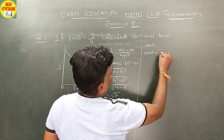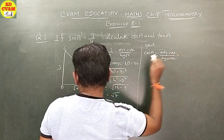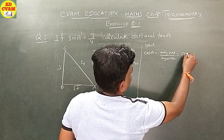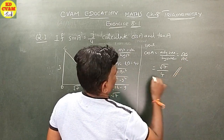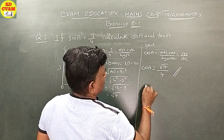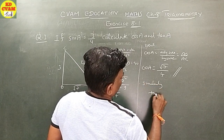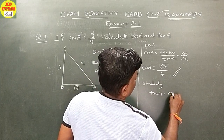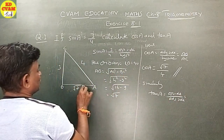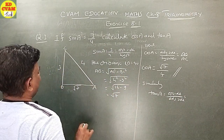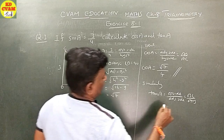Cos A is equal to adjacent side upon hypotenuse, which equals AB upon AC. That is, square root 7 upon 4. Similarly, tan A is equal to opposite side upon adjacent side, which equals BC upon AB. That is, 3 upon root 7.